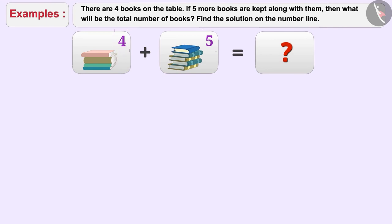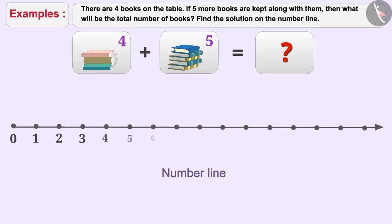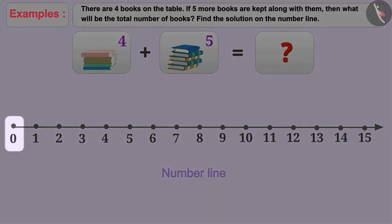Here we have to add four with five. First of all, draw a number line and mark the numbers zero to fifteen on it. You can express as many numbers as you want on the number line. The first number is four, so you will locate four on the number line.